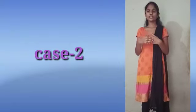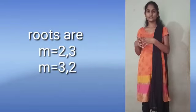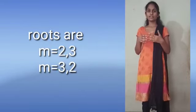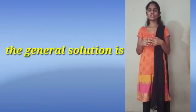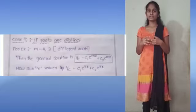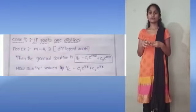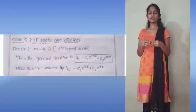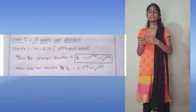Next, we move to Case 2. Case 2 is when the roots are different — for example, M equals 2 and 3, or 3 and 4. In that situation, the general solution is YC equals C1·e^(M1·X) plus C2·e^(M2·X). We substitute the different root values into the general solution.